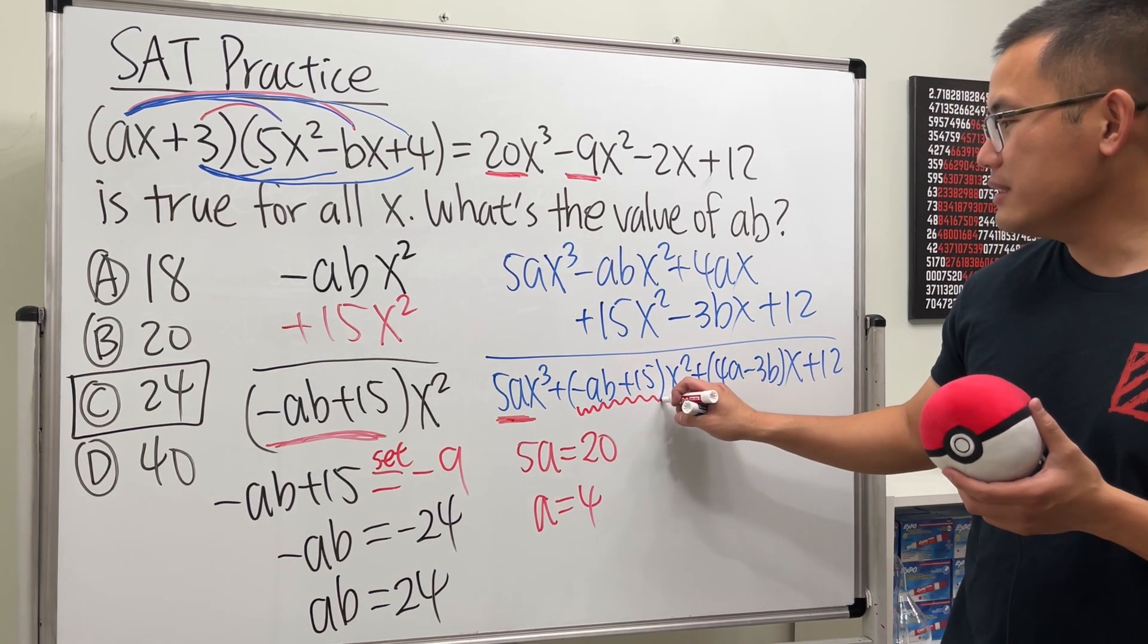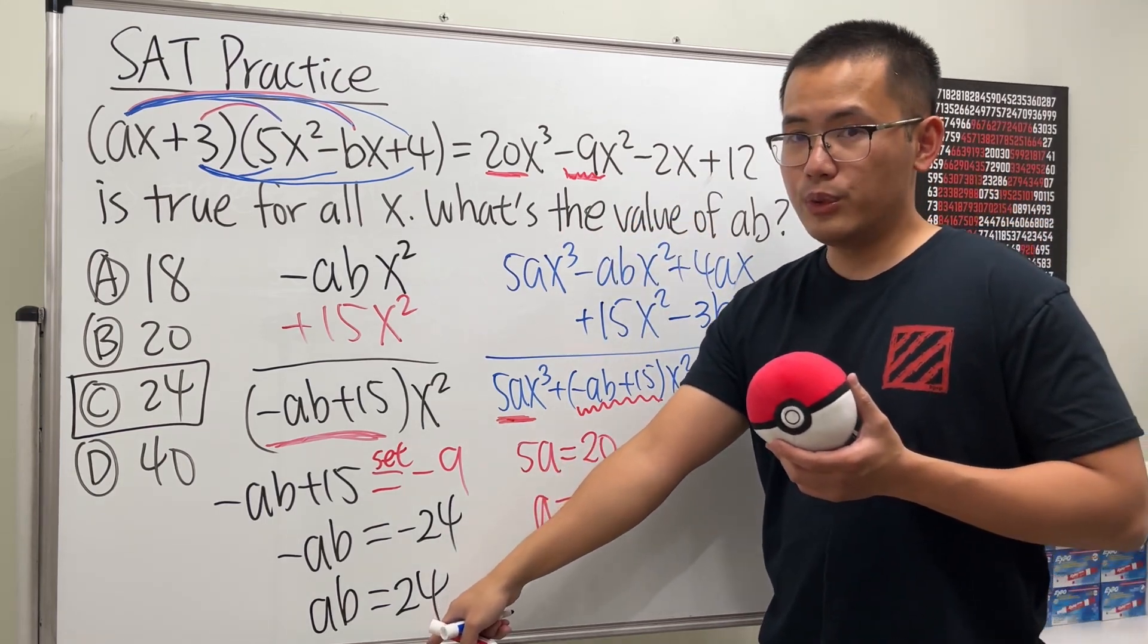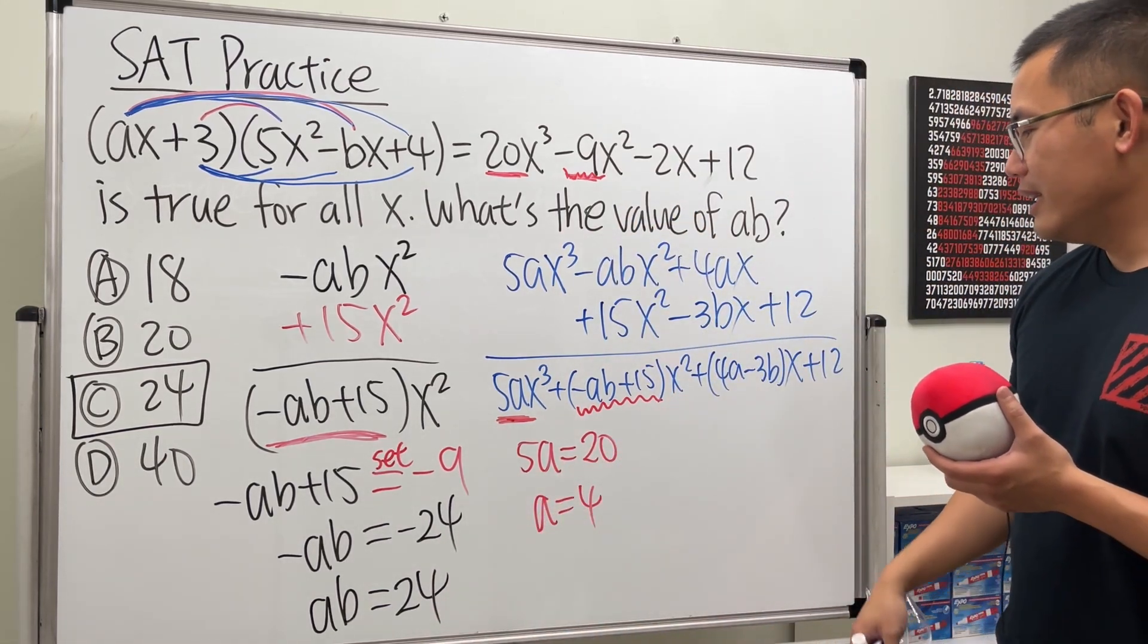So, that's why we did this. You see, earlier we did this. This has to be the same as negative 9. And we solved it. ab is equal to 24. And we're done. And then, you can continue.